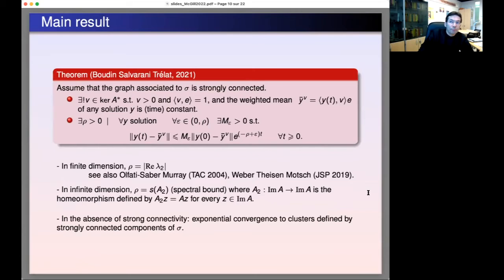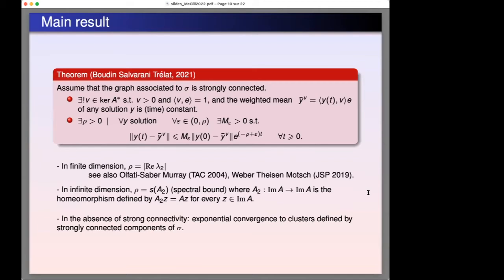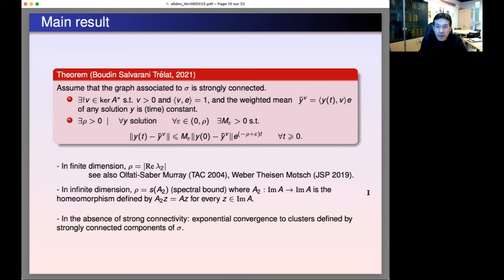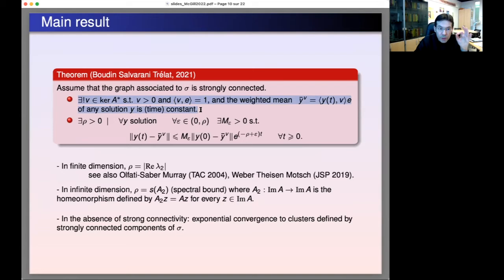Now the main theorem, valid in finite or infinite dimension. We assume that the graph associated to sigma is strongly connected. The conclusion is exponential convergence to consensus. More precisely: first, there exists a unique element V in the kernel of A* — where A* is the transpose of A in finite dimension, or the L2 adjoint in infinite dimension — such that V is positive and its scalar product with e equals one, which is a normalization condition.